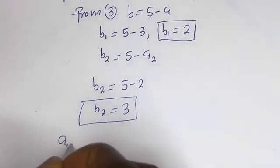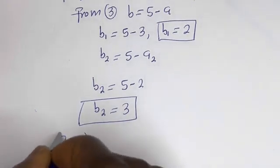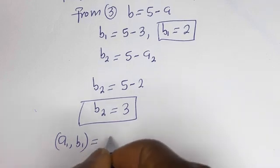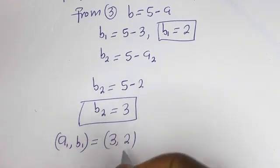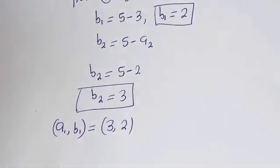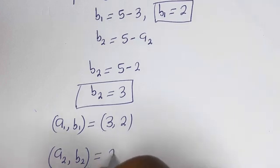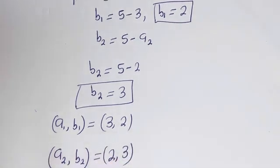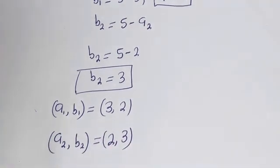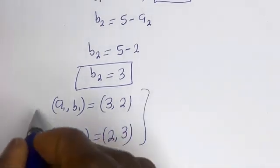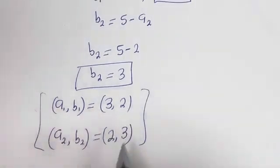Therefore our final answers are: (a1, b1) is equal to (3, 2), and (a2, b2) is equal to (2, 3). We may check to confirm if these answers are correct.